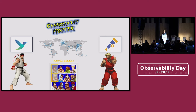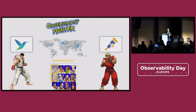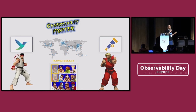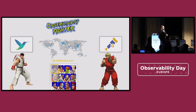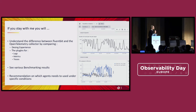On the right side of the ring, we have Ken, coming from the OpenTelemetry Dojo. Of course, it's the open standard — you all know about it. They provide a component called the Collector. First it supported traces, then metrics were added, and now recently it supports logs. So the big question is: both support metrics and logs — which agent should I choose? This talk is here to help you with that.